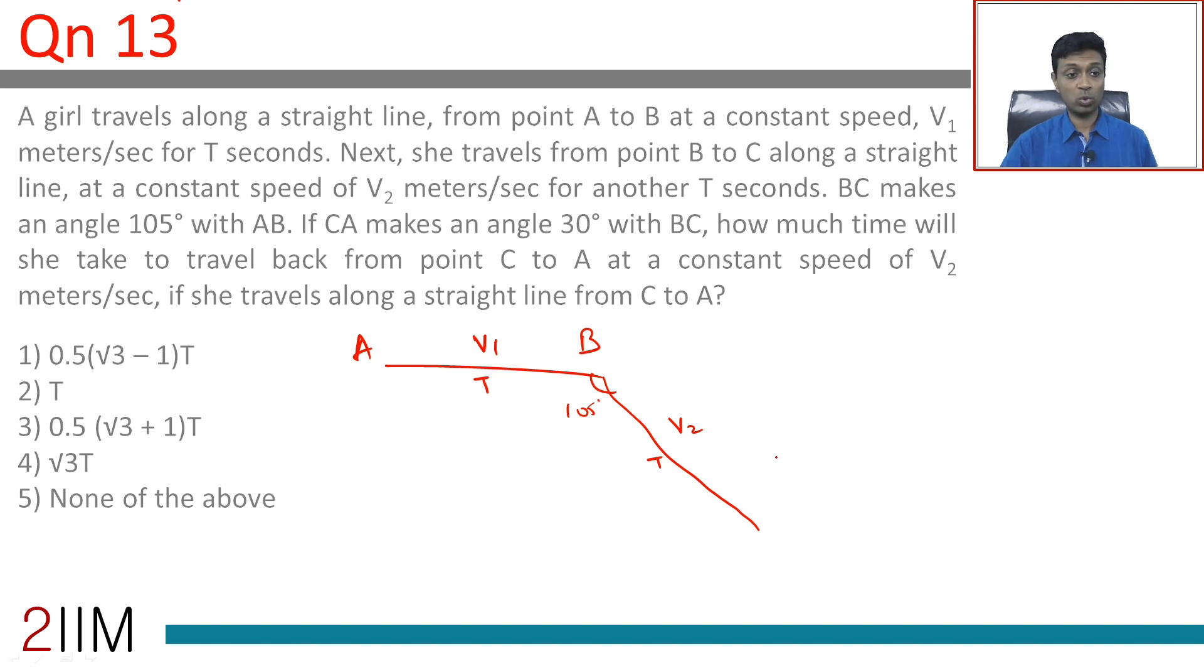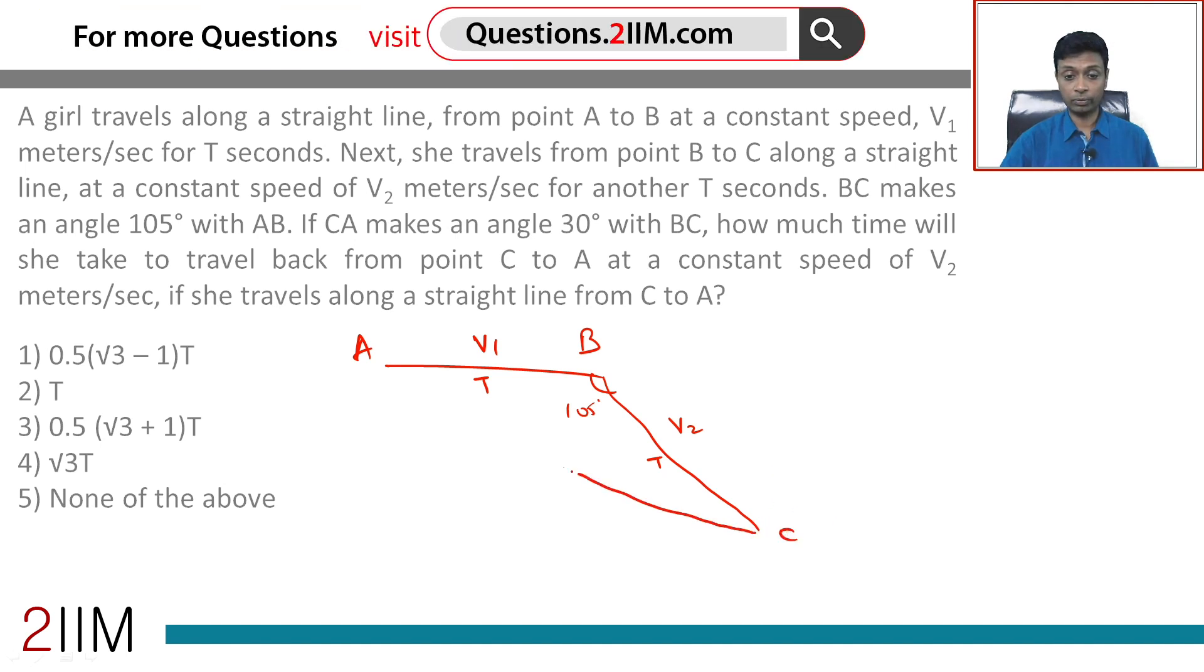How much time would she take to travel back from C to A at a constant speed of V2 if she travels in a straight line from C to A? Straight line does help.